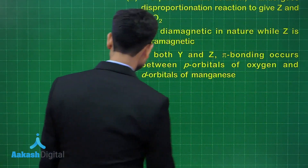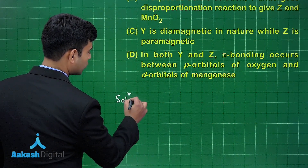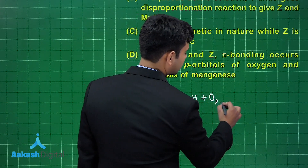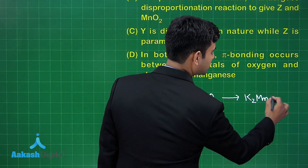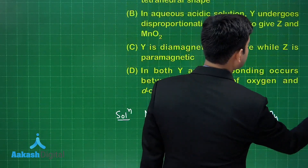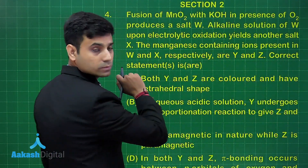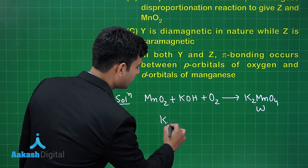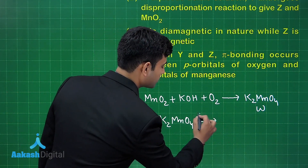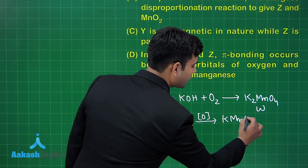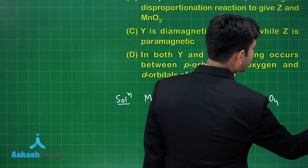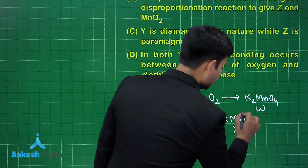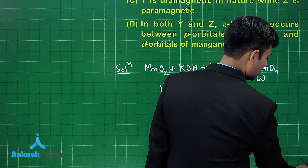Let's write the reaction. MnO2 with KOH and O2 gives us K2MnO4, which is potassium manganate. K2MnO4 is salt W and it is green in color. K2MnO4 on electrolytic oxidation gives us KMnO4, which is potassium permanganate. According to the question, KMnO4 is X and it is purple in color.